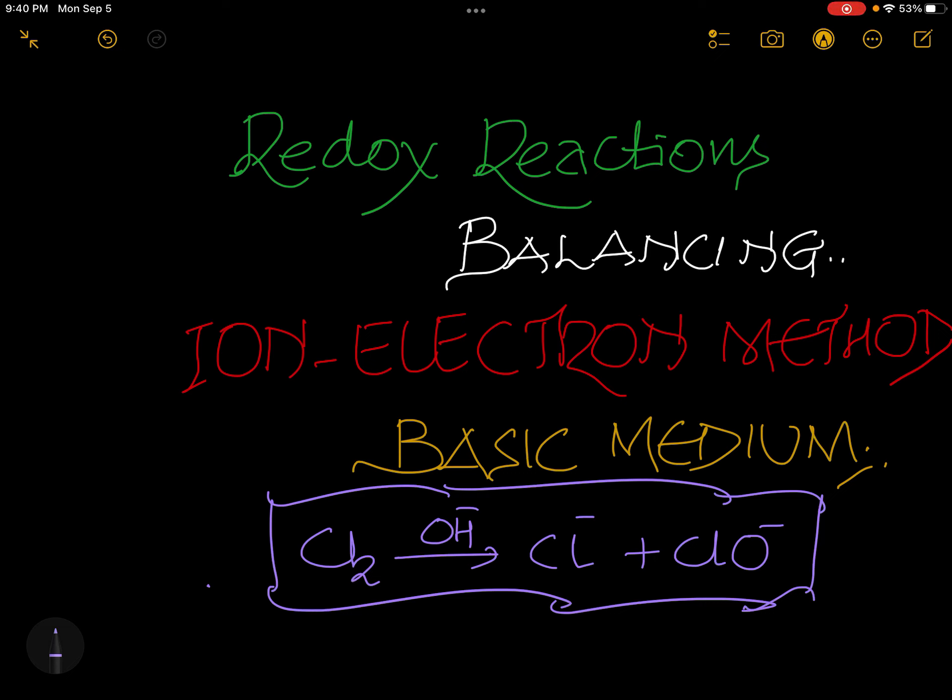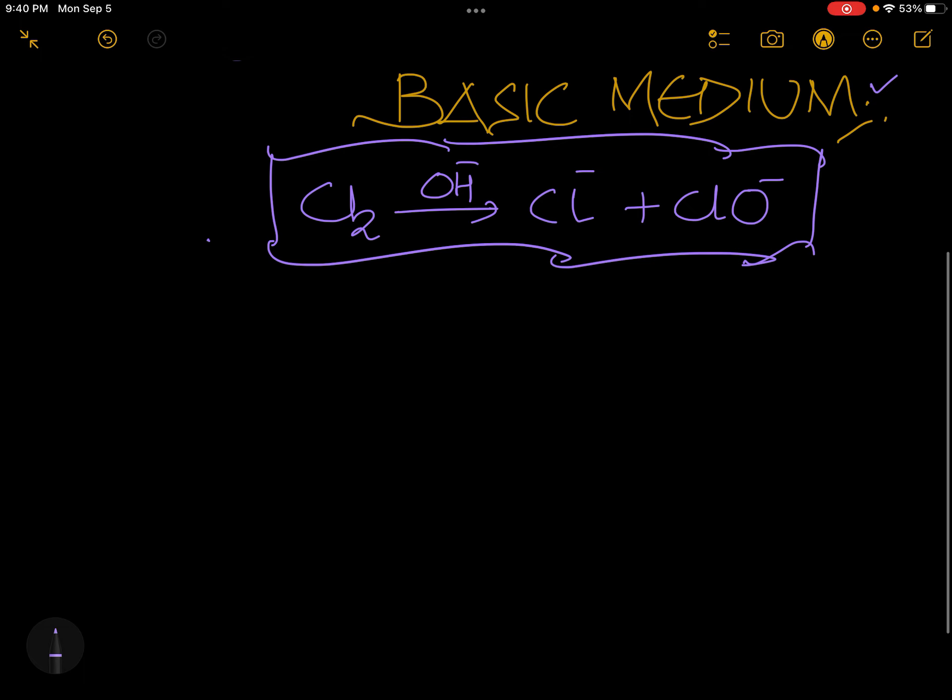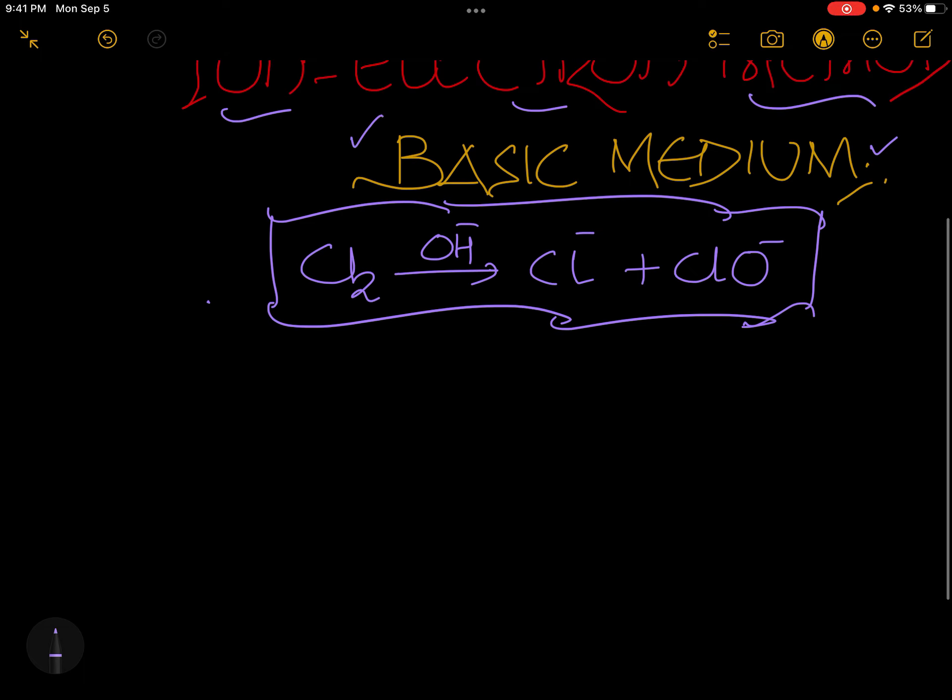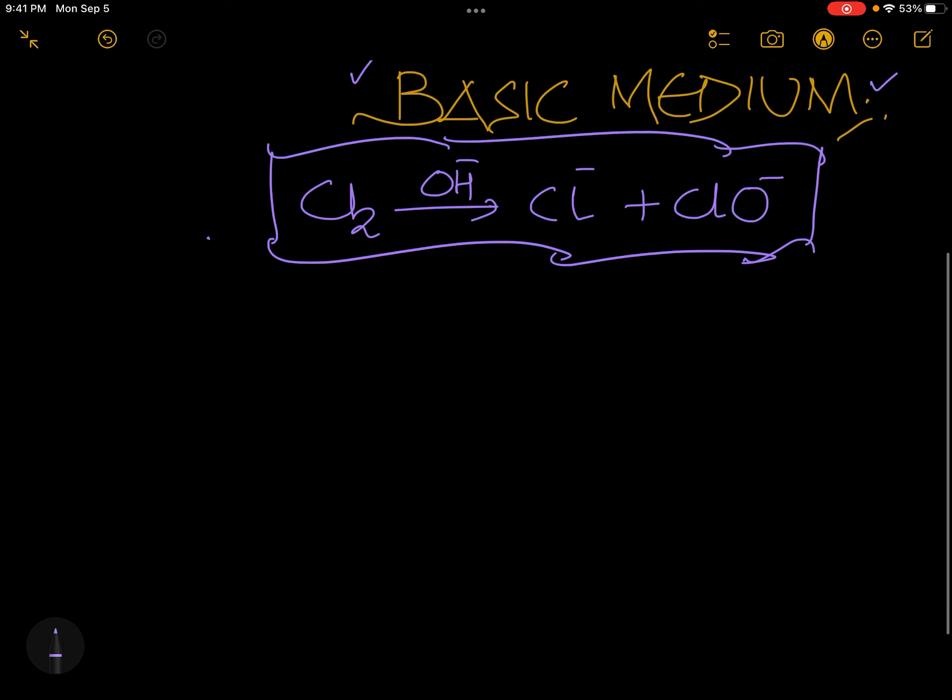Hi, this is your Lucky Sir. We will discuss now redox reactions balancing by the ion-electron method in basic medium. Are you ready? This is very interesting actually. Acidic medium and basic medium - there is only one difference in balancing of hydrogen atoms. You can learn this very easily. This kind of reactions are called disproportionation reactions.